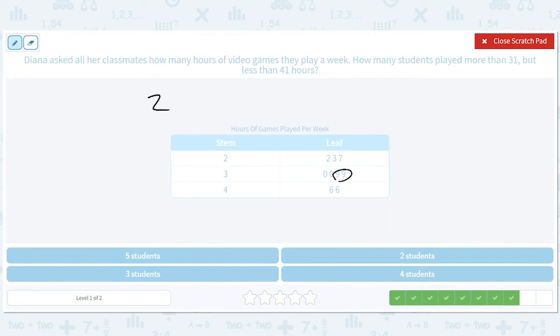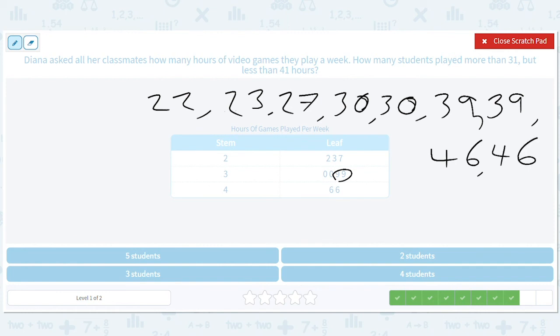So we have 22, and then we have a bunch of stuff, I'll just write them all out: 22, 23, 27, 30, 30, 39, 39, 46, 46. So how many students played more than 31 but less than 41? Well, these two, right? Because it has to be in the 30s and maybe 40, but there were no 40s. You could tell there's nothing in the 40s, there's only 39, 39. So two students.